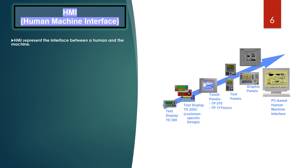We can also use HMI to document process values and alarms; alarms and process values can be output as a protocol by the HMI system, allowing you to output production data after the end of a shift. HMI can also be used to manage process parameters and machine parameters; these parameters can be stored by the HMI system and passed to the controller from the operator panels.